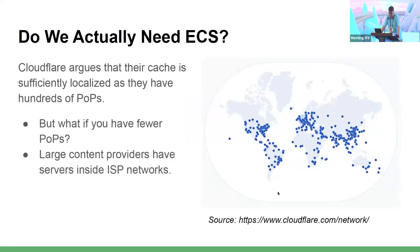So now we know there are some serious issues with ECS. But do we actually need it — is there another way? Some DNS recursive operators argue they can live without it. For instance, Cloudflare argues their cache is sufficiently localized as they have hundreds of points of presence. But what if you operate a DNS recursive with a smaller number of points of presence? And what about large content providers like Google, Facebook, Netflix, which have caching servers inside ISP networks? It would be rather hard to have a DNS recursive server in every ISP network. So to summarize, if you're operating a public DNS resolver, you most likely need to rely on ECS if you want accurate responses.